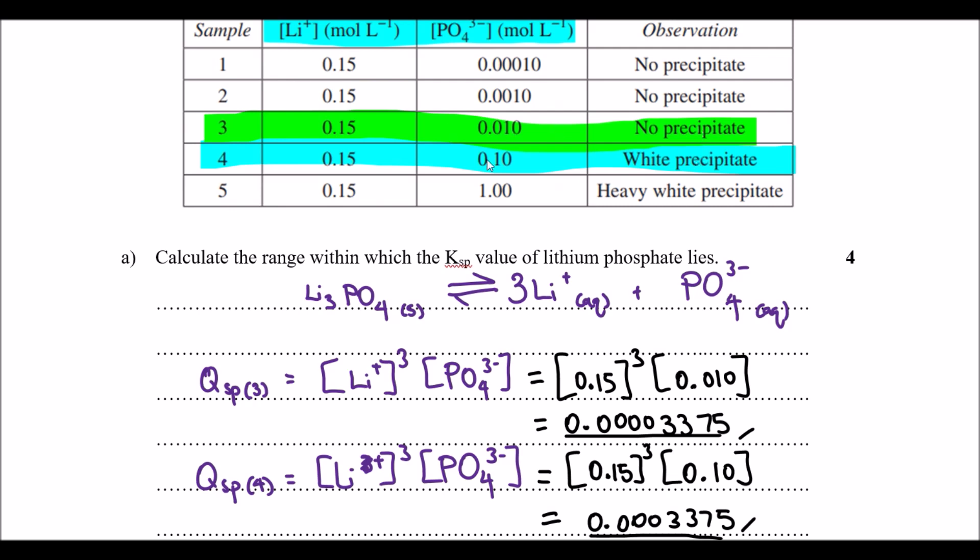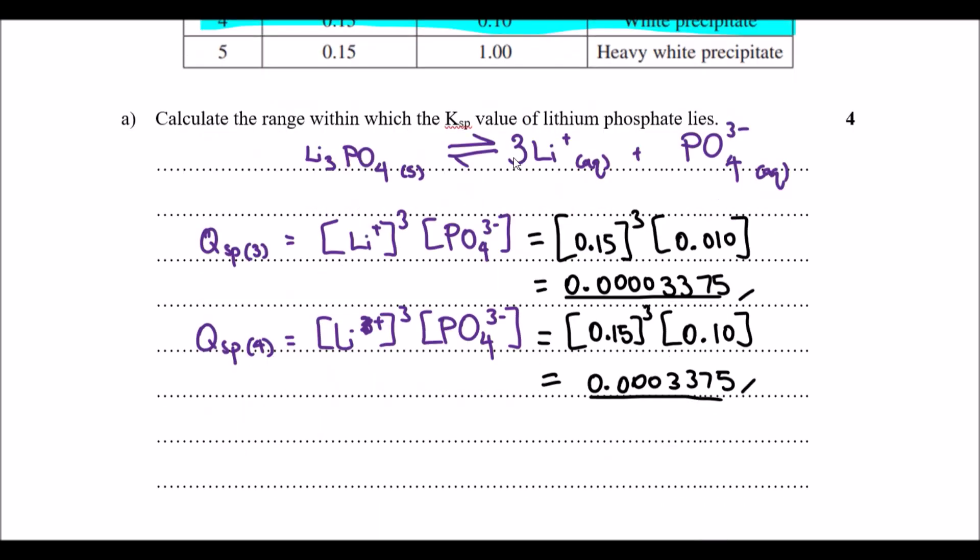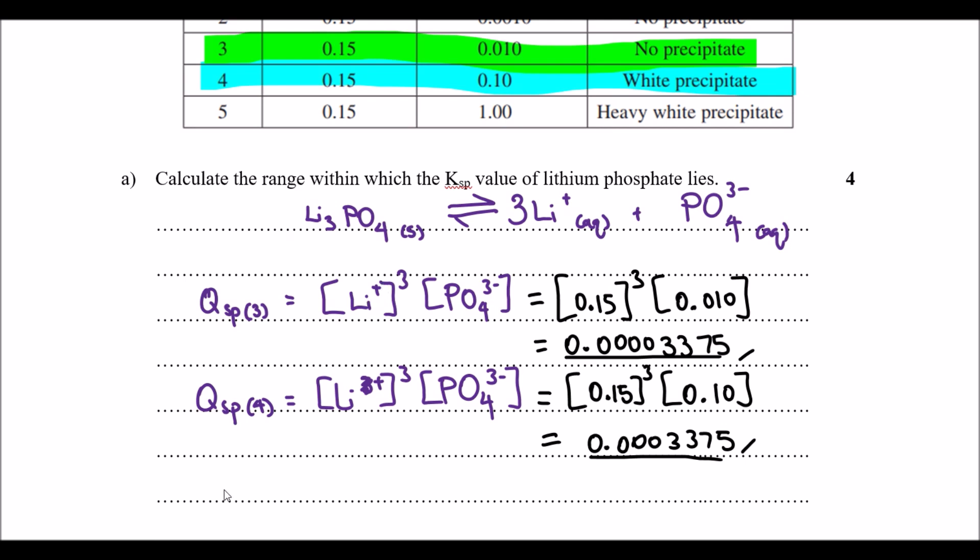So it has to be within the range of these two concentrations of phosphate. I'm going to write down range of ksp in this context lithium phosphate is between our values here, 0.00003375 to 0.0003375, and that's how you do problem A.